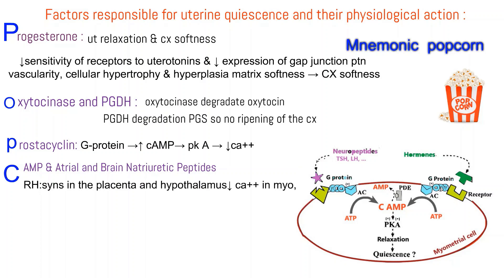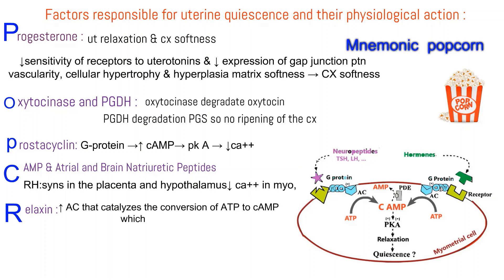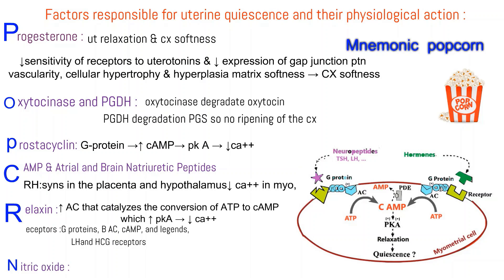R: Relaxin activates adenylyl cyclase, which catalyzes the conversion of ATP to cyclic AMP, activating protein kinase A and causing inhibition of calcium mobilization. R also includes receptors, G-proteins, adenylyl cyclase, cAMP, and ligands — luteinizing hormone and human chorionic gonadotropin receptors. N: Nitric oxide decreases intracellular calcium in the myometrium.